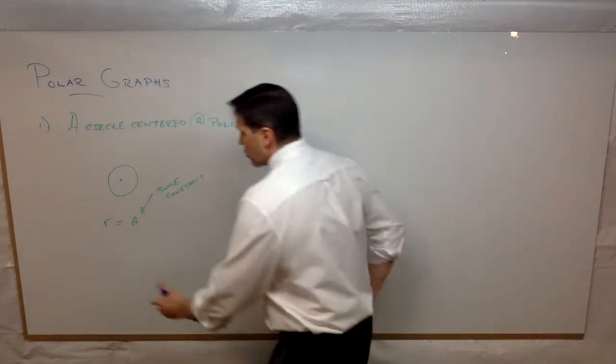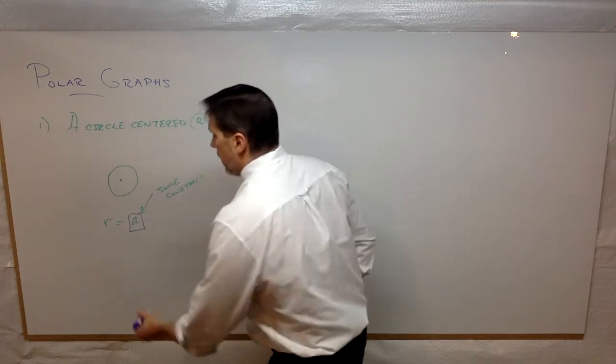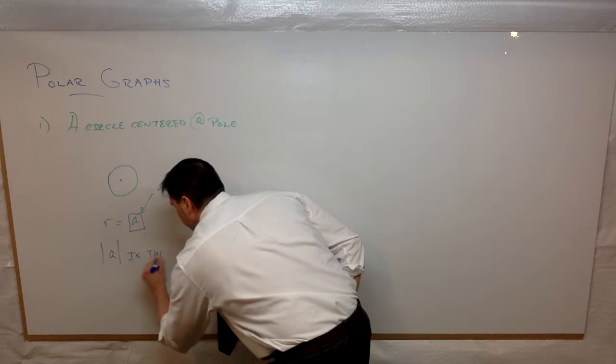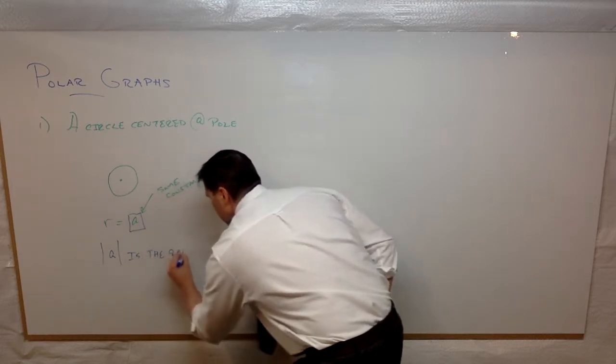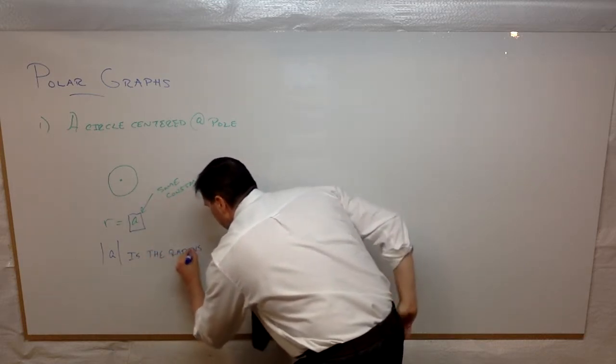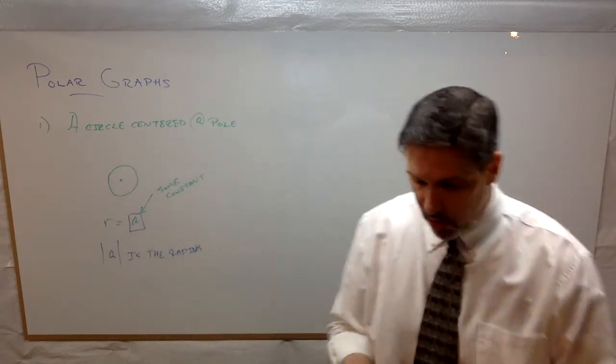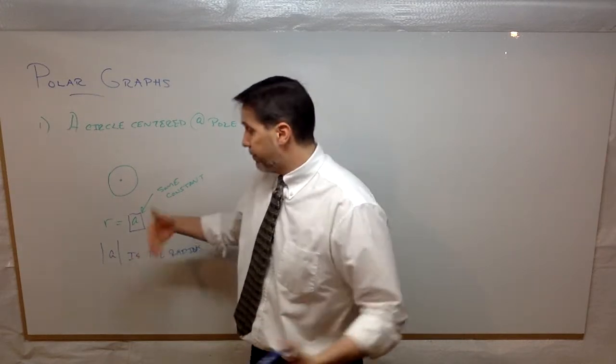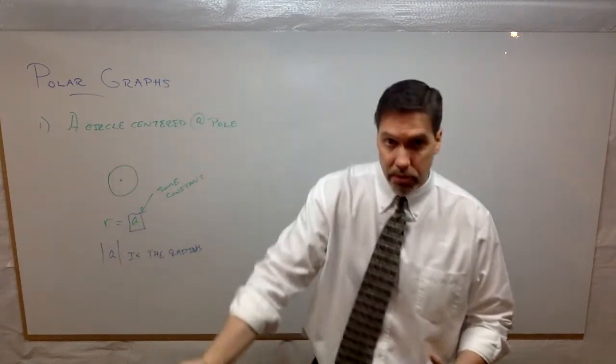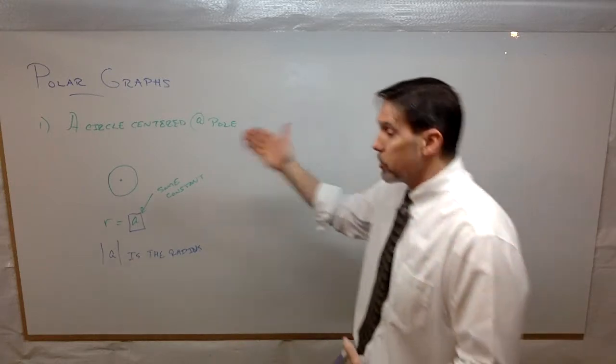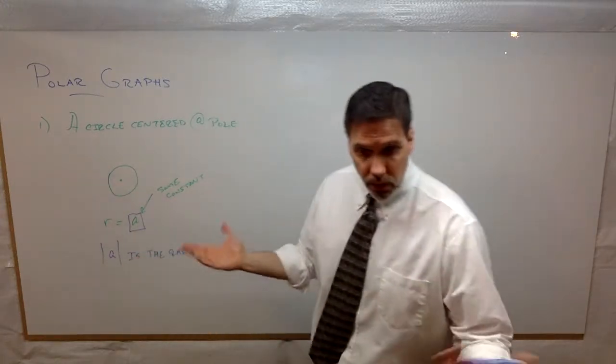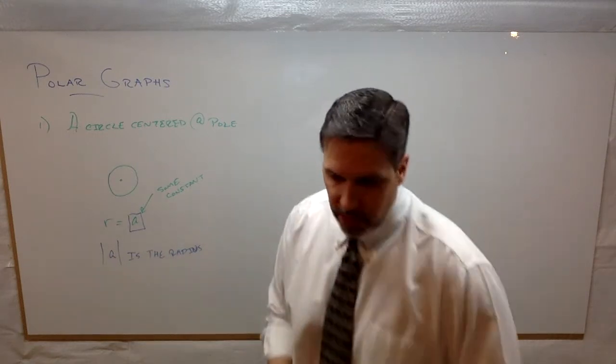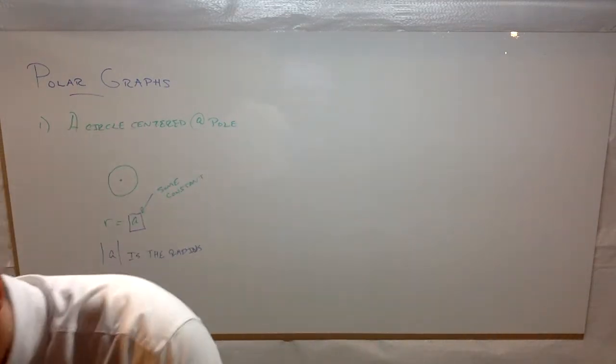So what we can say additionally about this value a, the absolute value of a is the radius. That is the radius of this circle centered at the pole. All right. Very simple. Now, if you do a negative value, it's not going to change much. If you punch in r equals negative four, you're still going to get a circle centered at the pole and the radius will still be four. So you'll get the exact same picture. Nothing is going to change there. All right. So, like I said, start simple, work our way up. Number two.